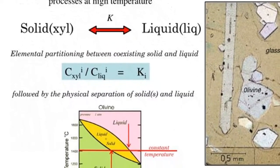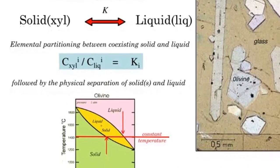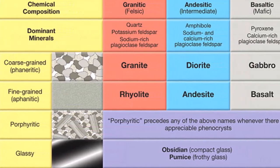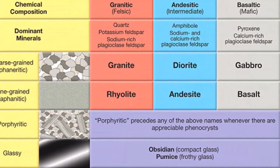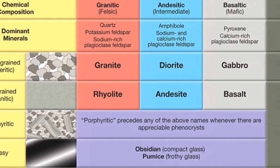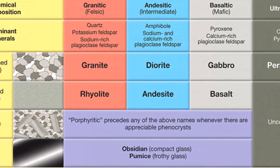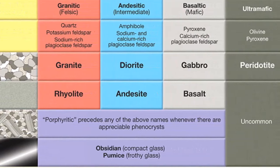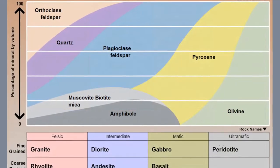If the melt should separate from the earliest formed minerals, its composition will be different from that of the original magma. A single magma may generate rocks with widely differing compositions. As a consequence, a great variety of igneous rocks exists.